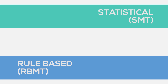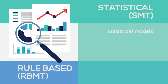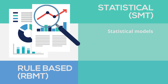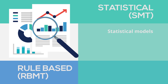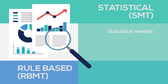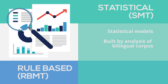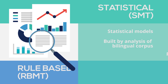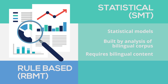Statistical machine translation, also known as SMT, uses statistical models to generate the translation of the source content. Statistical engines don't analyze text based on language rules. Instead, the statistical model is built by analyzing bilingual corpus and requires an appropriate volume of bilingual content to do so.